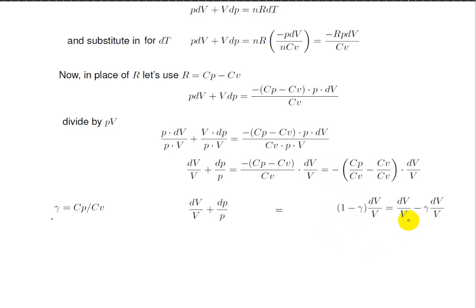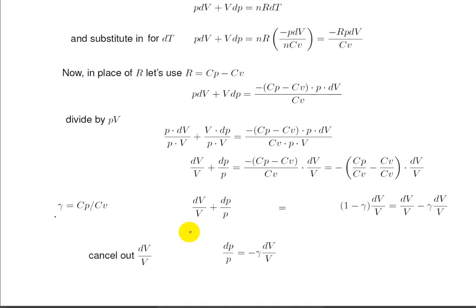Next, I've gone ahead and expanded this particular parentheses, so we have dV over V minus gamma times dV over V. We can cancel out dV over V from there and from there since it appears on both sides, and we get dP over P is minus gamma times dV over V.